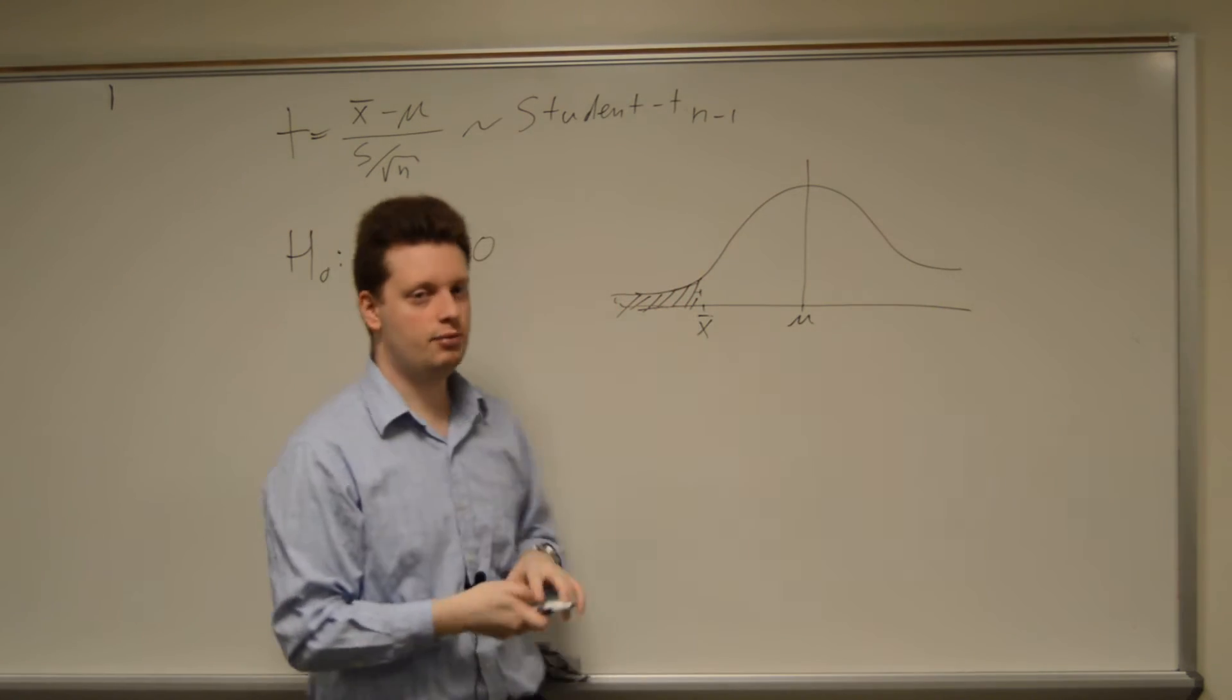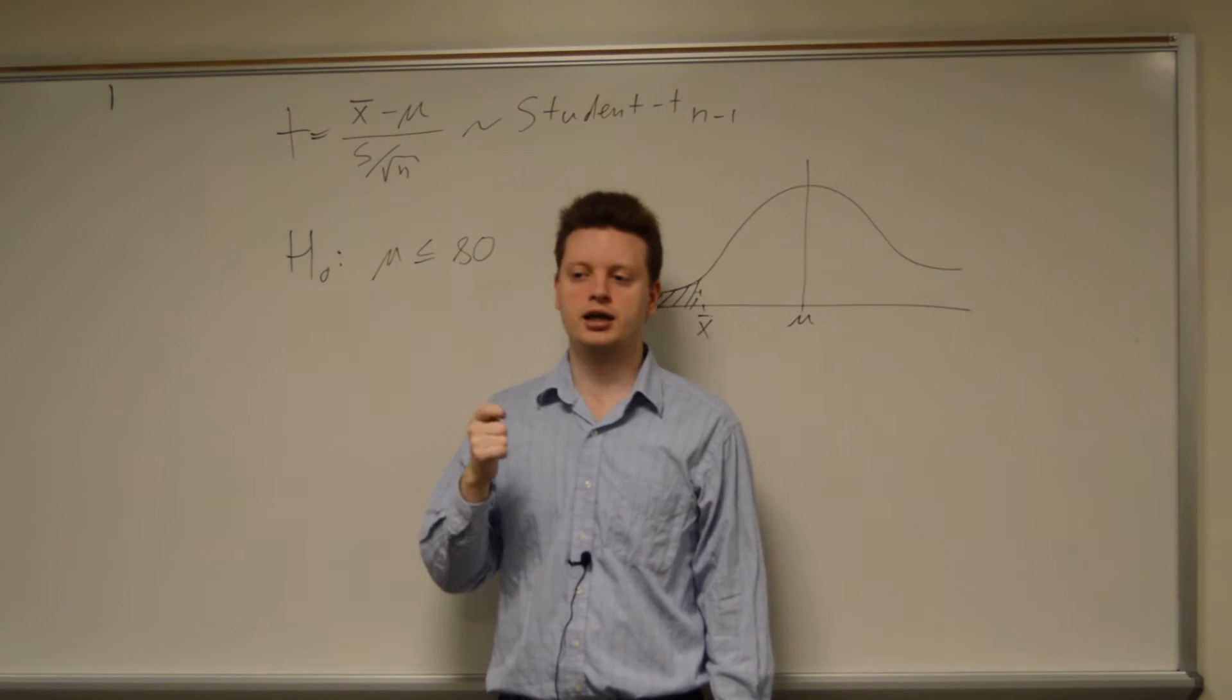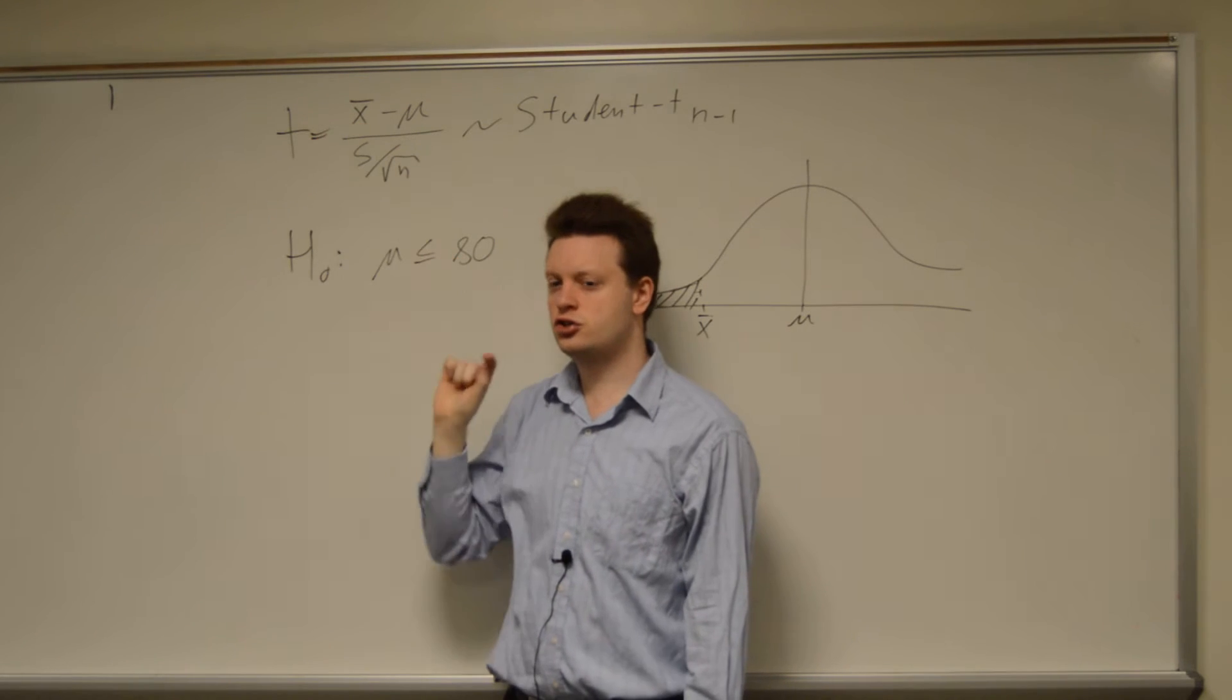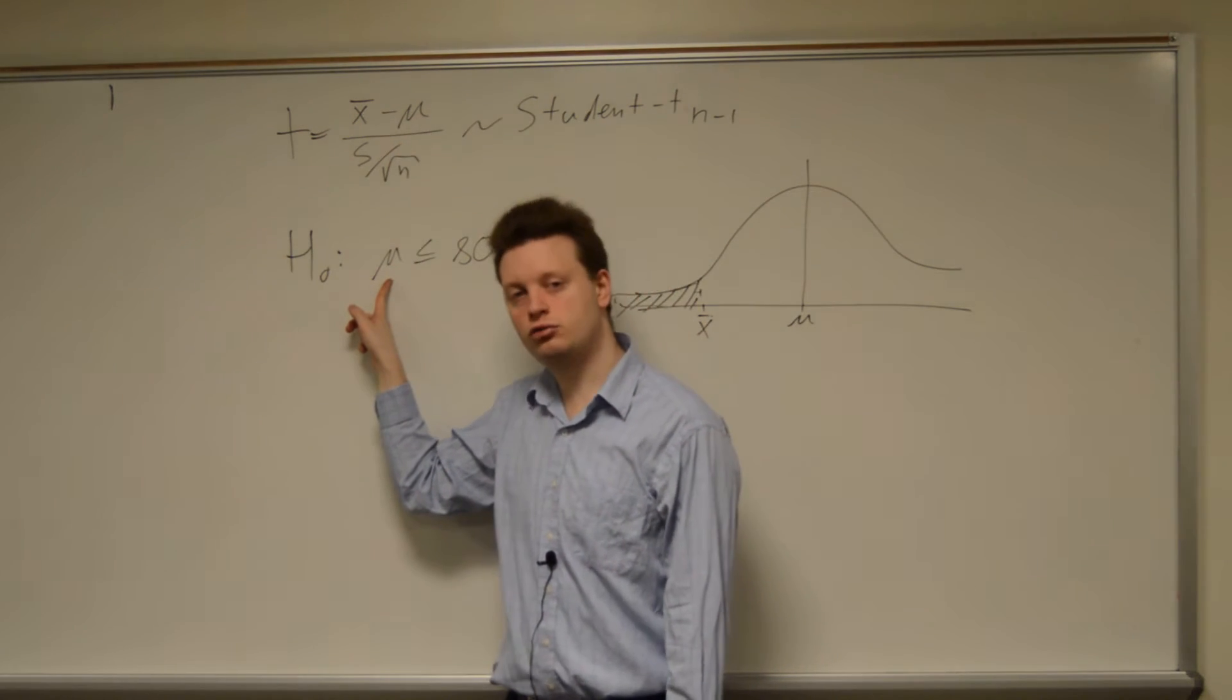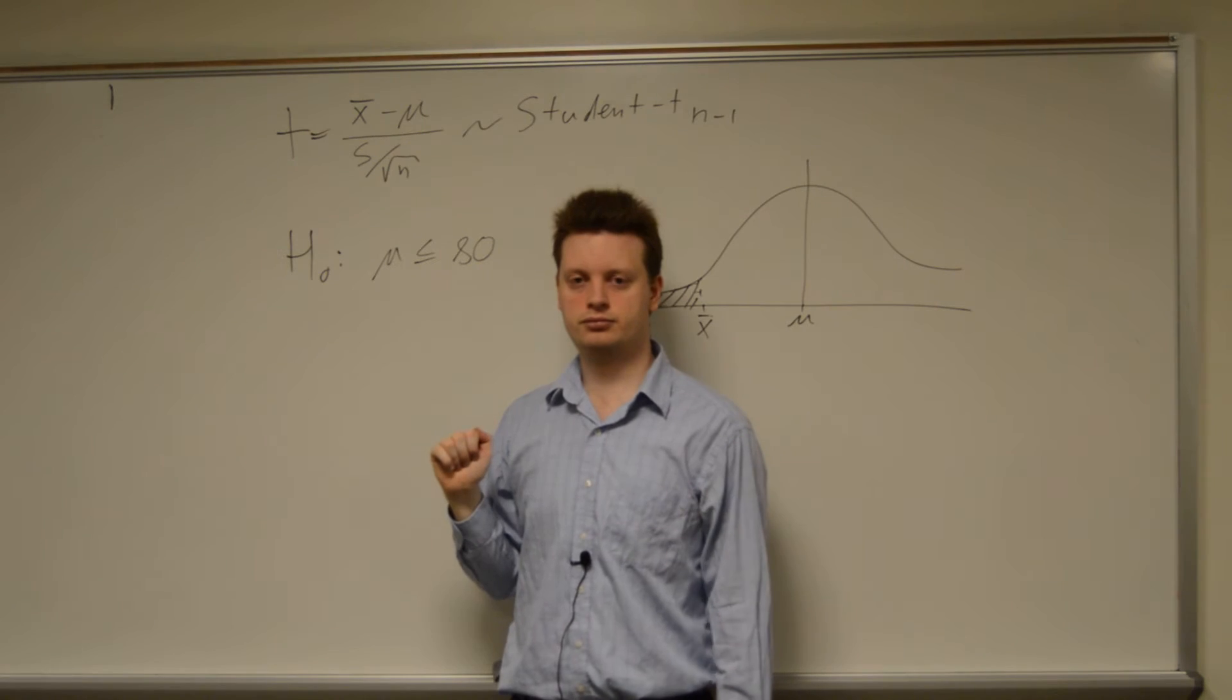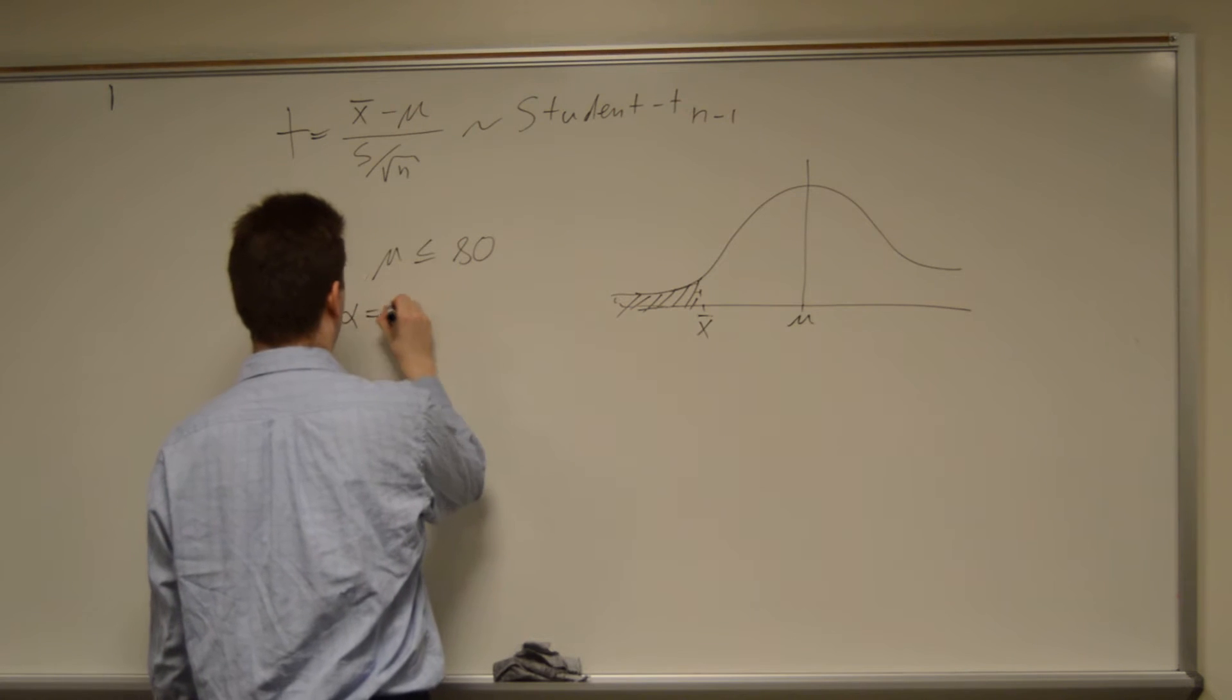This hypothesis here, we need to attach a threshold. And the threshold is saying, if the probability of the event we found here, our x bar, is too small if I assume the true mean of mu, then I will reject this hypothesis.